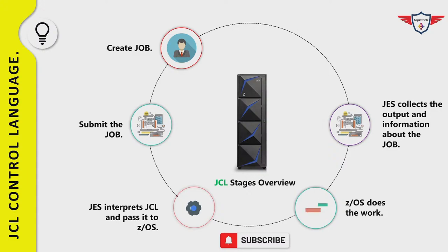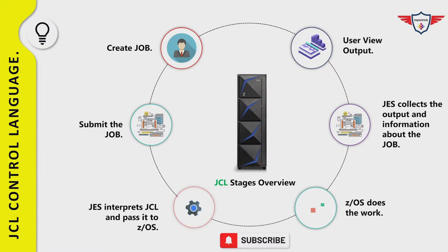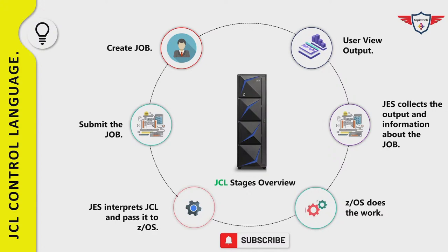In the output phase, once the job is completed, JES2 collects the output and sends it to print based on output class and device setup. In the last phase, the user can view the output in the spool. The output can be a report, a new dataset, or a database update, depending on business requirements. In this example, the monthly tax report will be available in the spool because we do not want to print on an actual printer.